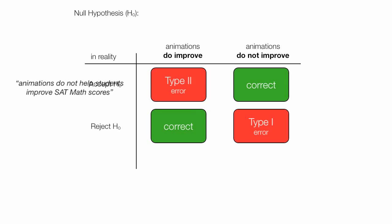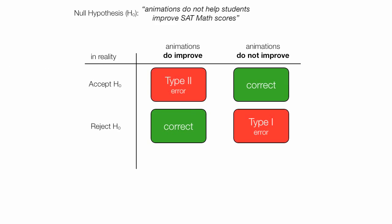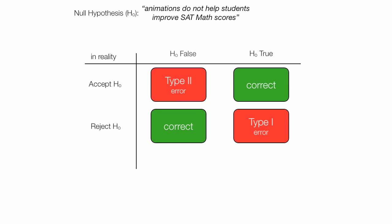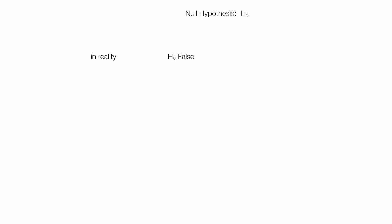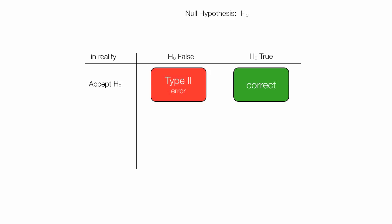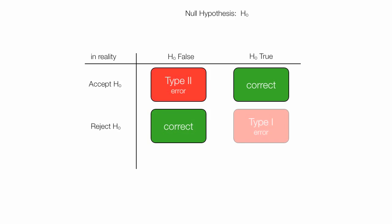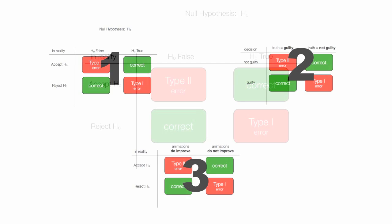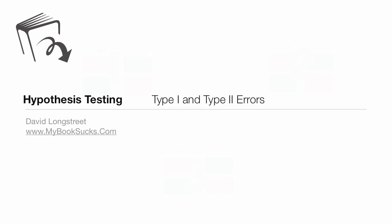I'm going to put everything back and fade everything back in. The first column contradicts the null hypothesis, so we can label this as 'null hypothesis is false.' On the other hand, if animations do not improve in reality, the null hypothesis is true — it reaffirms that statement. Going back to the very first table I showed you, it's built like this: in reality, either the null hypothesis is false or true; and we either accept or reject the null hypothesis. This has been an introduction to hypothesis testing using three different examples, and I hope this has been useful — there's more to come.